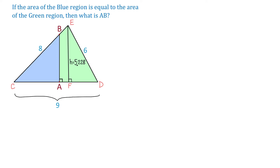Next we need to find the areas of triangles EFC and BAC. We know that the area of triangle BAC is half of the area of triangle EDC. And to find the area of triangle EDC, we can use Heron's formula.